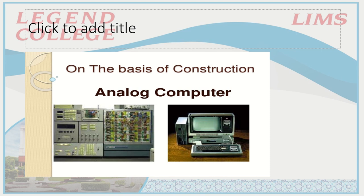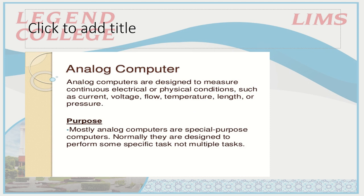On the basis of construction, first we have analog computers. Analog computers are designed to measure continuous electrical or physical conditions such as current, voltage, flow, temperature, length, or pressure. Analog computers are designed to measure continuous signals — that is why we have analog computers.